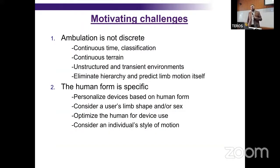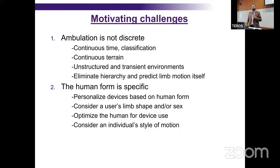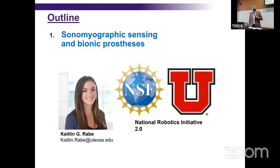Our lab focuses on a few core challenges related to ambulation. Ambulation is not discrete — it's continuous time, continuous terrain, with unknown and known scenarios that devices need to operate in. Humans are specific in how they move: everybody has individualized gait patterns, their own intentions, and values they place on certain things. Their body shape matters too — putting a prosthesis on someone can be very personalized. One project funded by the NRI 2.0 program involved recent graduate Caitlin Raby looking at muscle-based sensing.